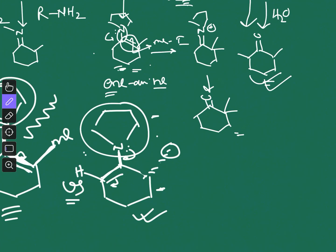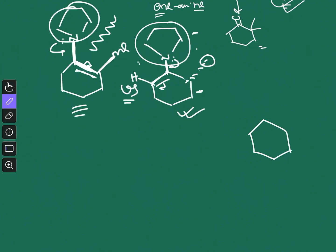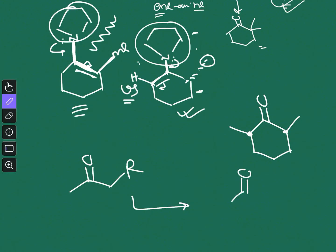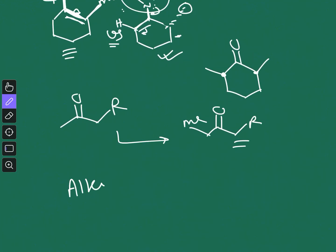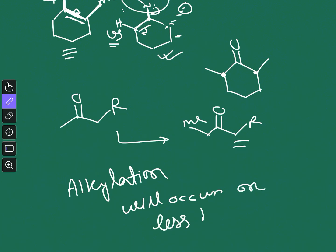Between the two enamines, the less hindered one is more stable and the reaction will go through that pathway. In this case, the correct product is methylation on the less hindered side. Similarly, if you do the same kind of reaction with the other substrate, you will get methylation on that less hindered side. The rule is: methylation or any alkylation will occur on the less hindered side during enamine alkylation. This is a very important concept and many questions will come from this topic. I hope you understood — if you liked this video, give a thumbs up, share with your friends, and subscribe for more videos.